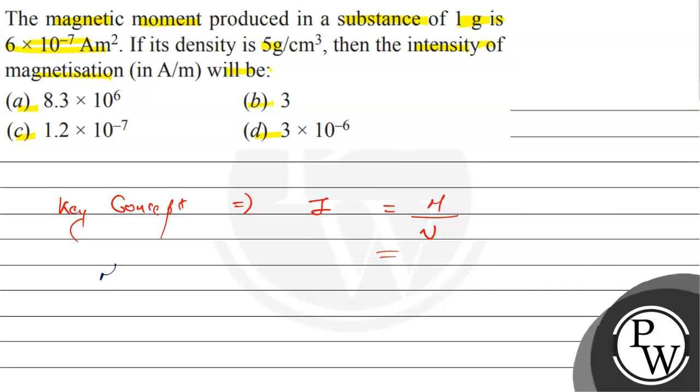Now, what is given to us? Mass is given as 1 gram, which equals 10⁻³ kilogram. And density is given as 5 gram per meter cube, which converts to 5 × 10³ kilogram per meter cube.